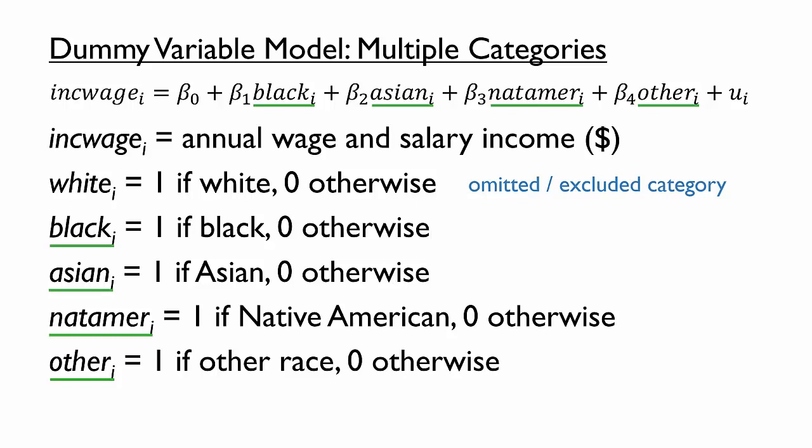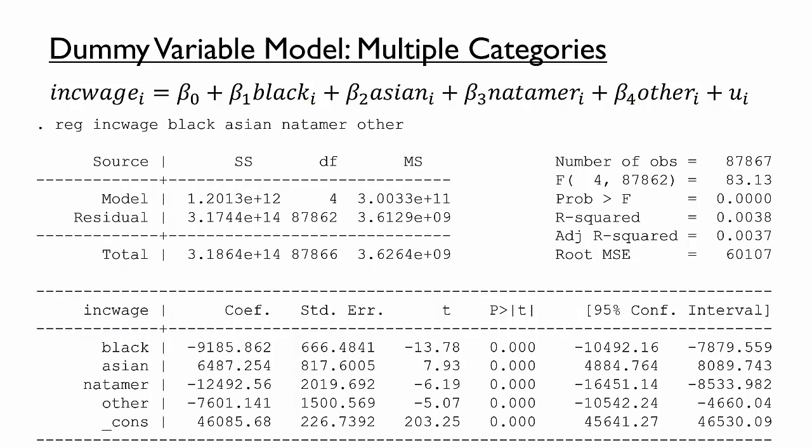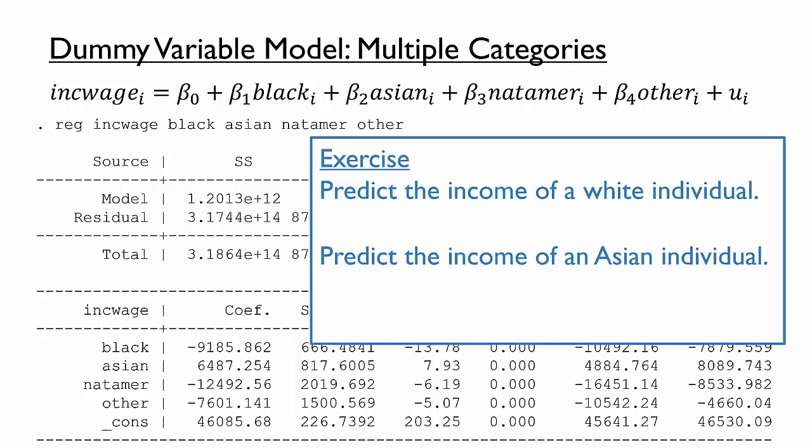Let's now turn to the model's estimates. To interpret the coefficients, we will use the same strategy as we did with the gender model, making predictions. Take a moment to try the following exercise. Use the model's estimates to predict the income of a white individual and then predict the income of an Asian individual. You may wish to pause the video for a moment while you work through this exercise.